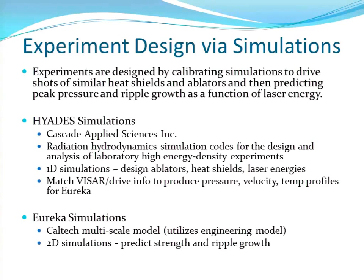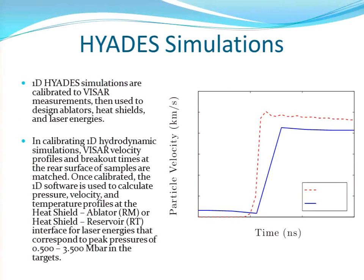A bit more on the Hiates simulations — in the end, what we care about is getting the pressure profile that we then use as input into Eureka. But you can also use Hiates to design ablators, heat shields, and to play with different laser energies. These are the Eureka simulations we do at Caltech. We get the inputs from Hiates, and we can study single ripple samples to predict what kind of growth measurements and strength we're going to get in experiments.